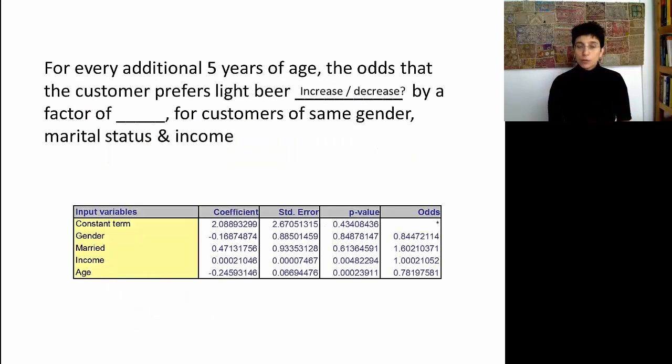Try and solve one of these problems on your own. So we looked at income. Let's now look at something else. For every additional 5 years of age, what are the odds, how are they going to increase, that the customer prefers light beer? Are they going to be higher or lower than for similar customers who are 5 years younger? Try and solve this problem.